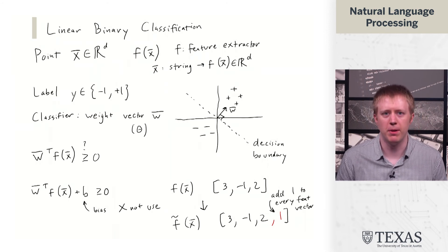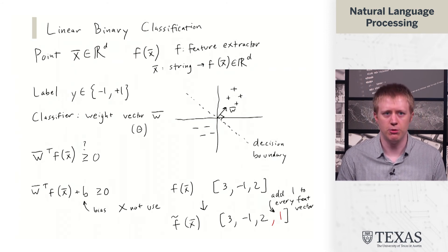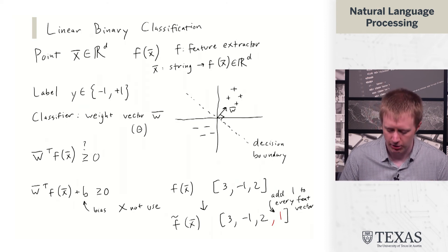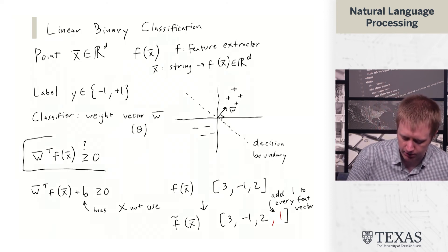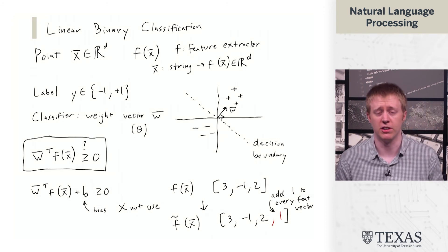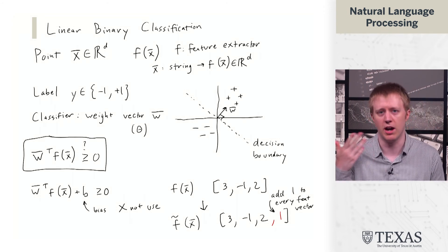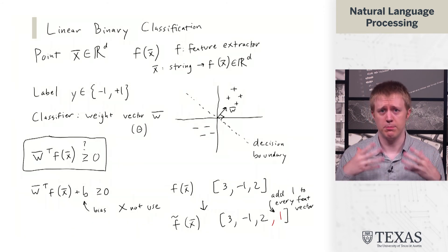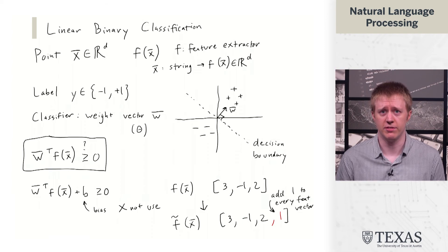So by adding a 1 to the end, we have basically folded this bias term into the actual feature vector. And so that's what's going to allow us to stick with this representation of a classifier going forward. We're not going to have to juggle these bias terms. This is the basic setup of binary classification.